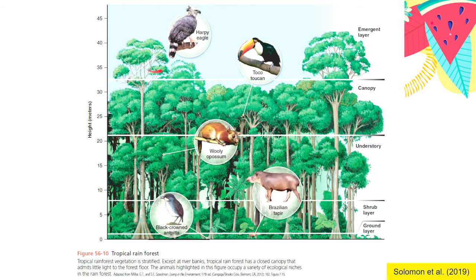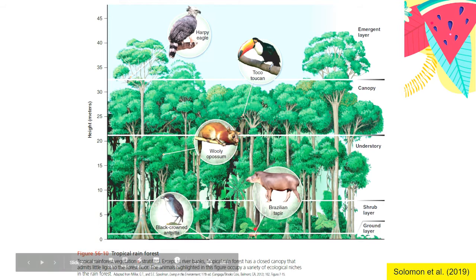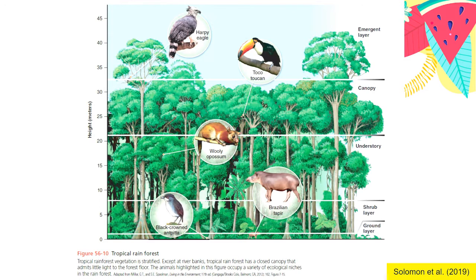You can also find different organisms in each layer. Eagles — harpy eagles — are found in the emergent layer. Birds such as toucans are found in the canopy layer. You have your opossum found in the understory. Brazilian tapir are found in the ground layer. They have such variety at different levels of vegetation, and that also allows different animals to survive.